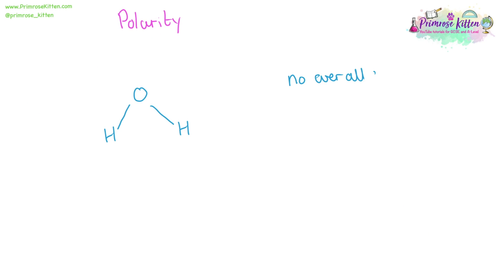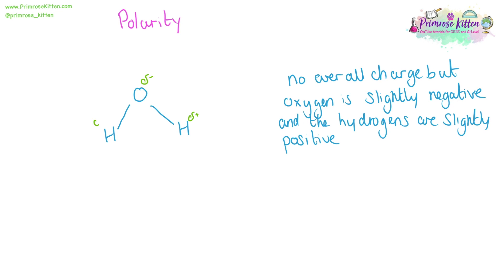An individual water molecule has no overall charge, but it does have polarity. The oxygen is slightly negative, and we show that by doing a little delta and negative sign. And each of the hydrogens is slightly positive. And we can show that by doing a little delta plus. The delta means a partial charge or slightly positive or slightly negative. Partially charged positive, partially charged negative.